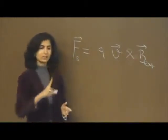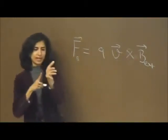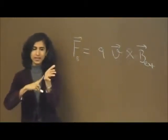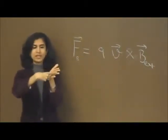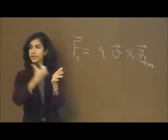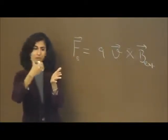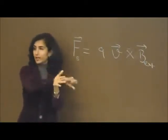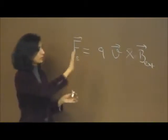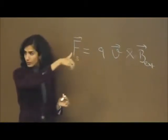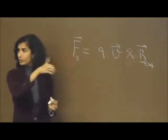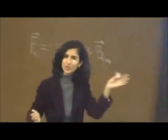The magnetic force is always perpendicular to the plane in which V and B lie. If B is like this, think of a plane that has V and B in it - the magnetic force will be pointing perpendicular either this way or that way. You use the right-hand rule with V cross B to figure out which direction is correct.